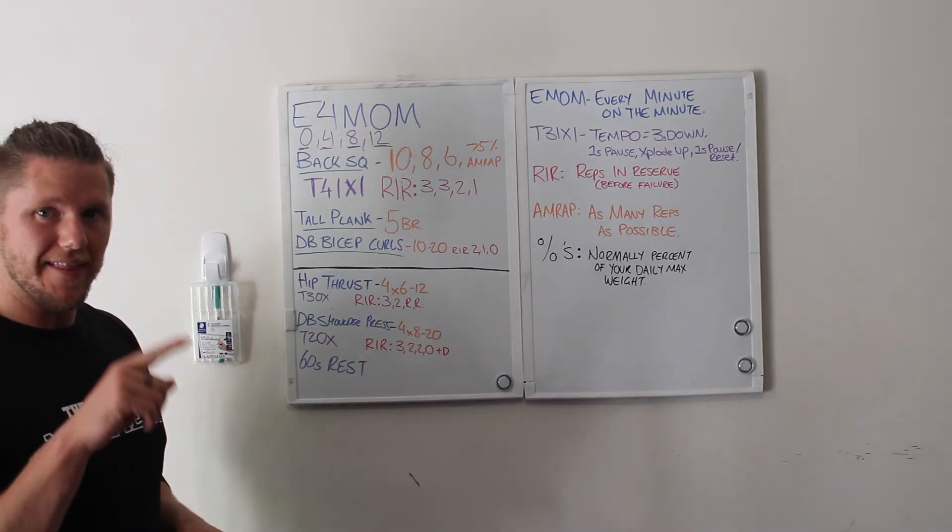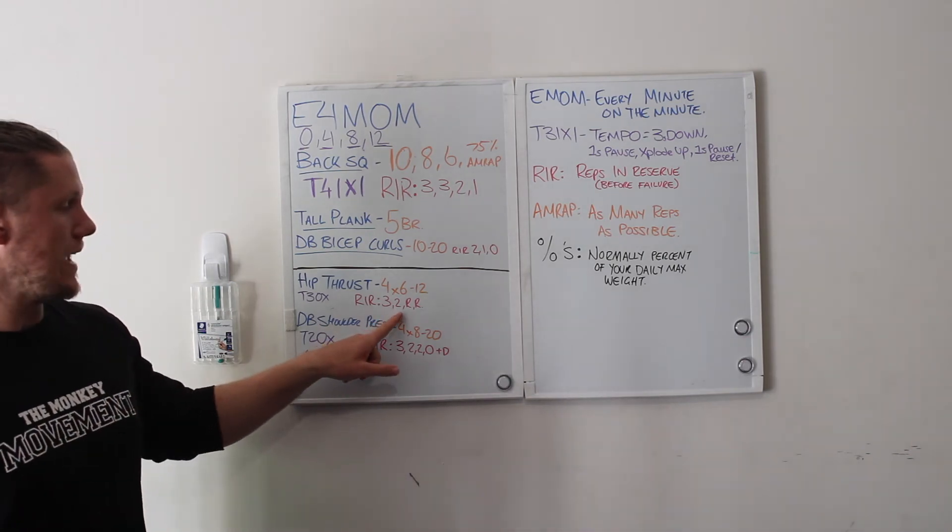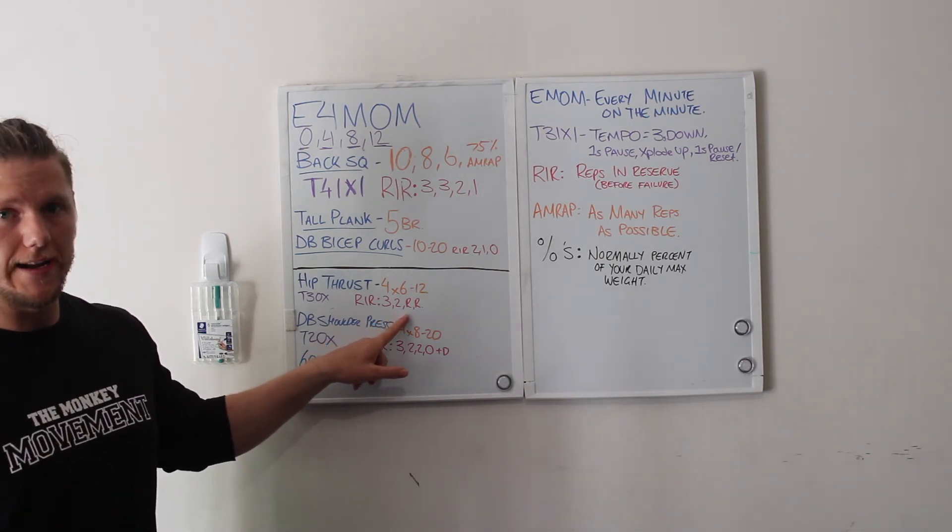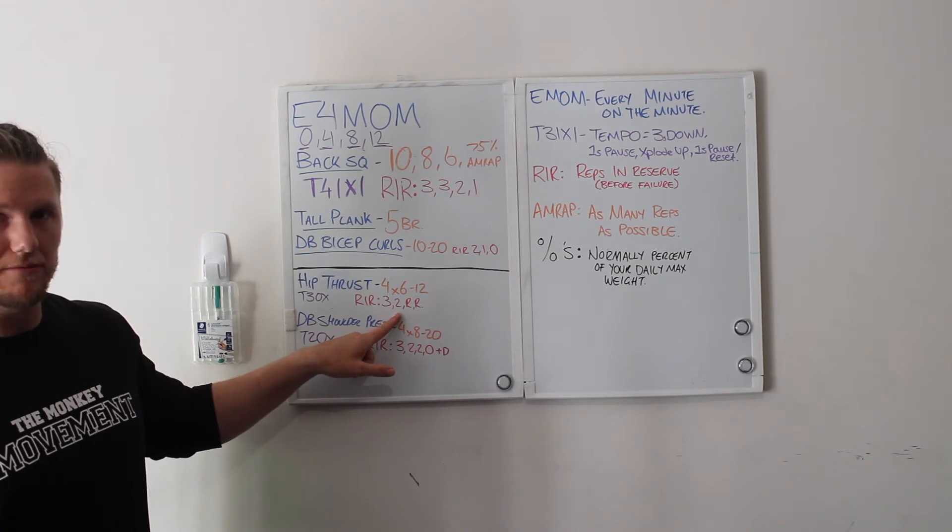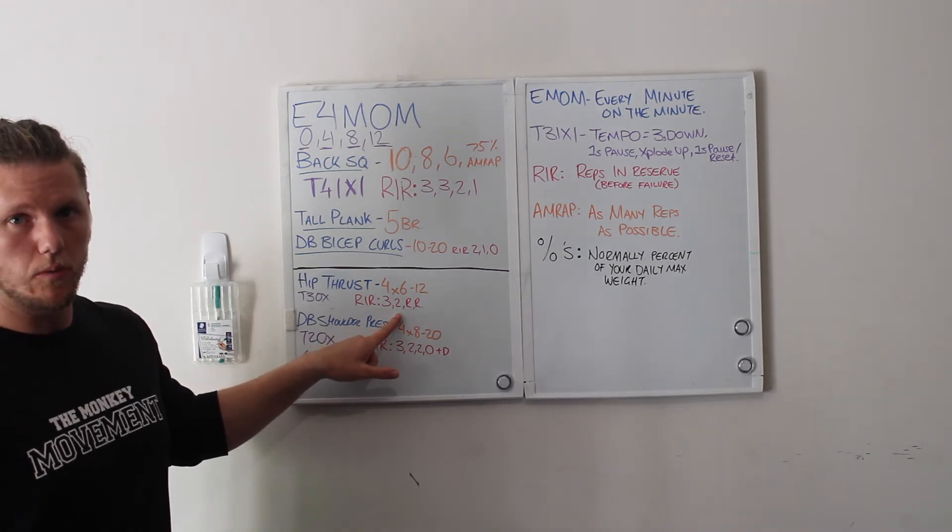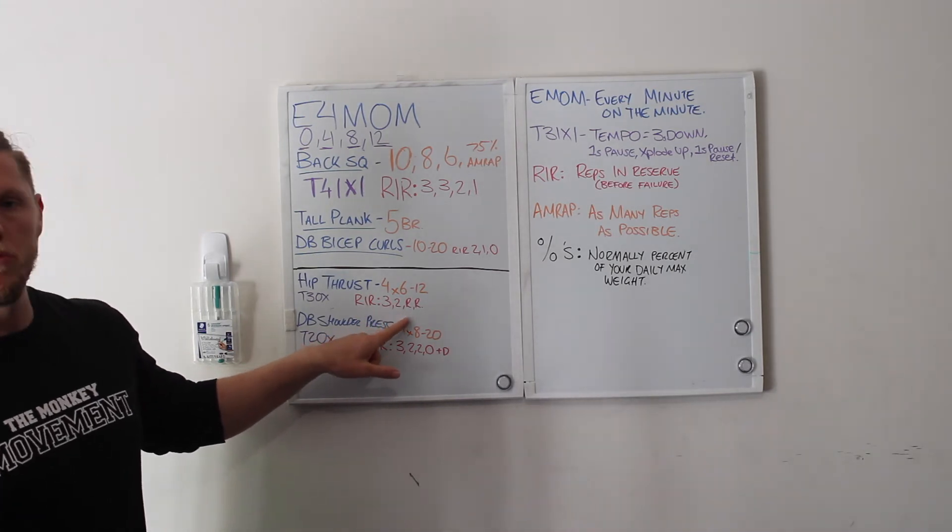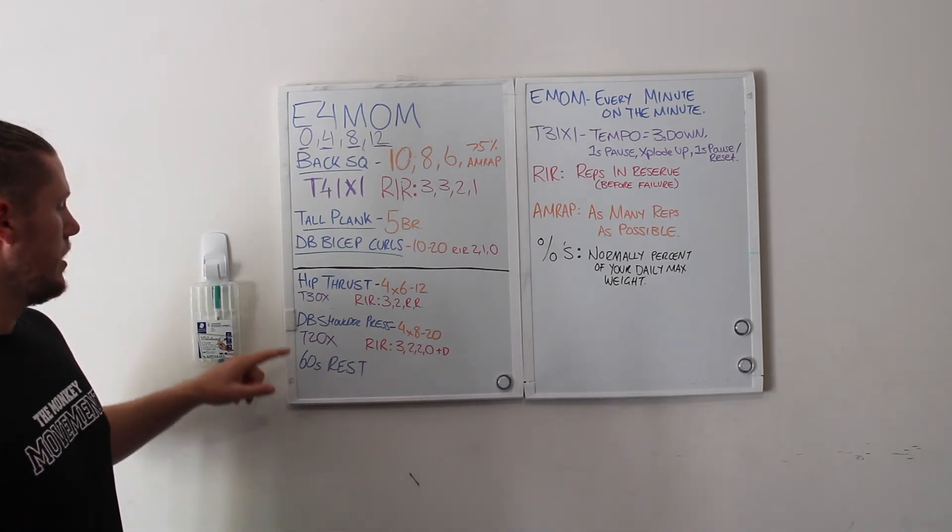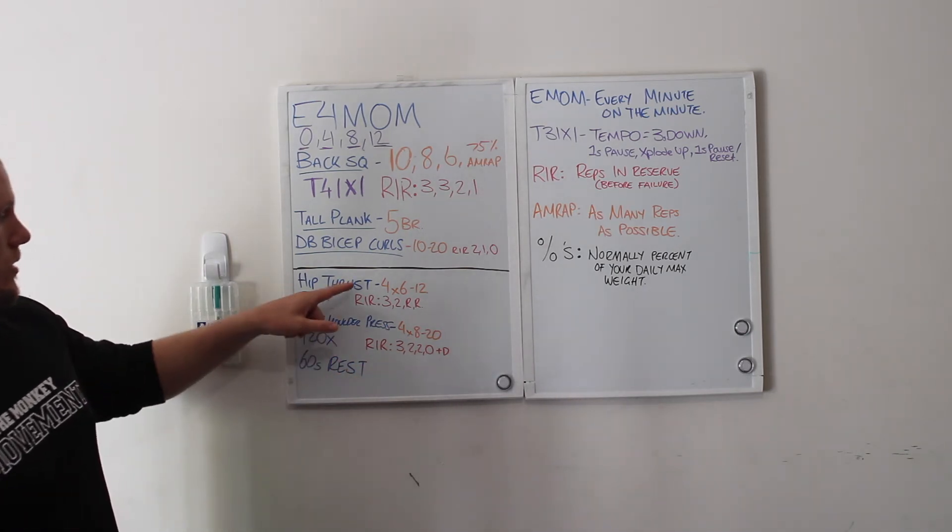If you see an R, that means repeat the last set if you hit the right intensity. If you're at six reps in reserve, you probably need to put the weight up and aim for another two before you repeat the weight.